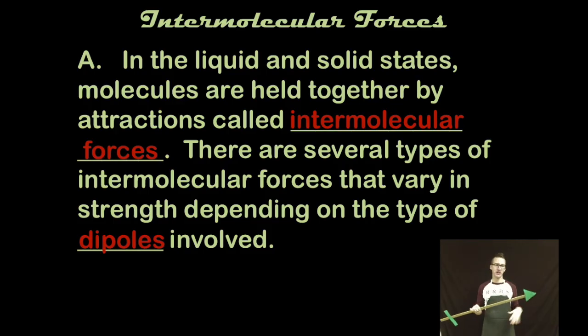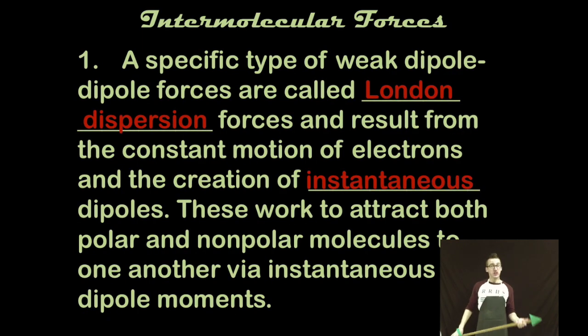Again we're talking about things that have slight negative and slight positive charges. Now the first type of intermolecular force that we need to be familiar with is the weakest type known as London dispersion forces. And London dispersion forces result from the constant motion of electrons and the creation of what are called instantaneous dipoles, or these things that only last for a moment.